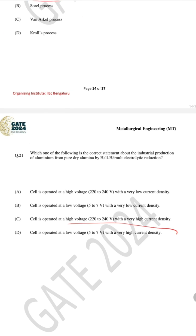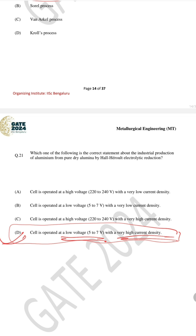For question number 21, the correct answer is D. For the Hall–Héroult electrolytic reduction process, the cell is operated at low voltage with high current density.